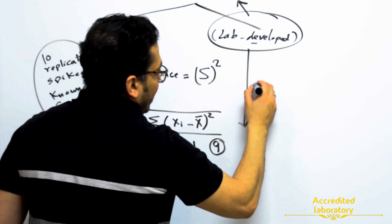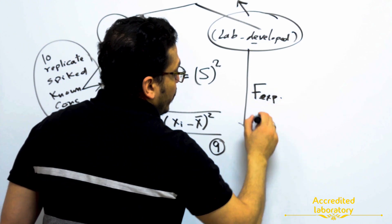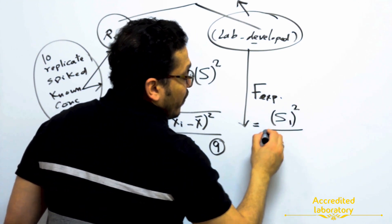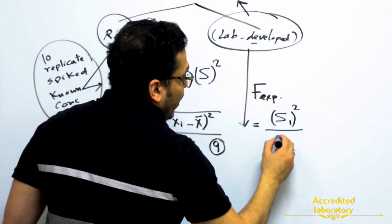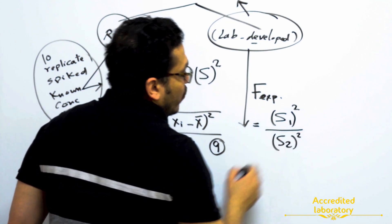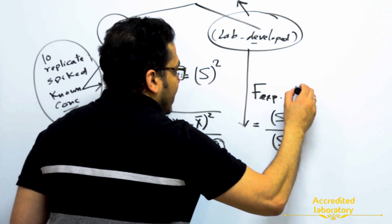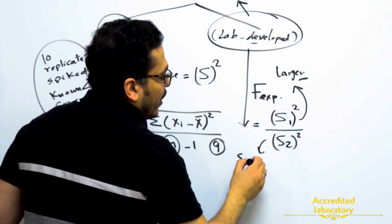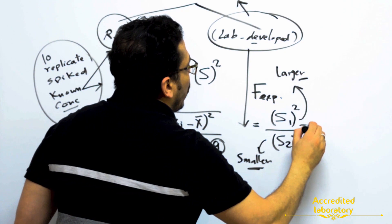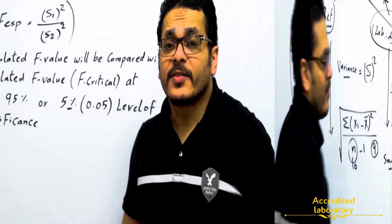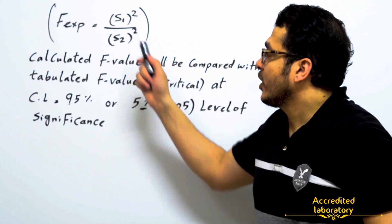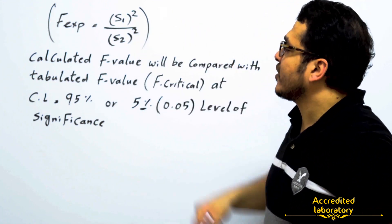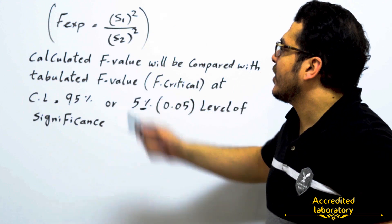Then you will calculate F-experimental. F-experimental is equal to the variance of group one divided by the variance of group two. You should take care that the larger variance is placed in the numerator and the smaller variance in the denominator, so the result will always be positive. F-experimental equals the larger variance divided by the smaller variance.